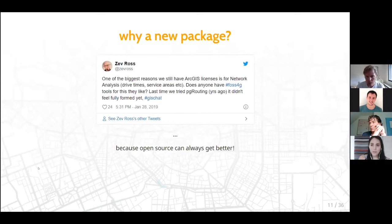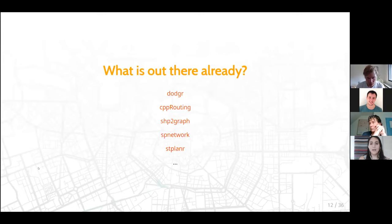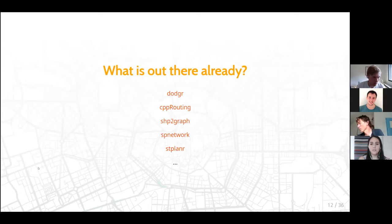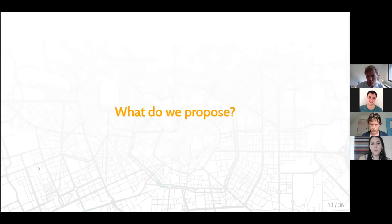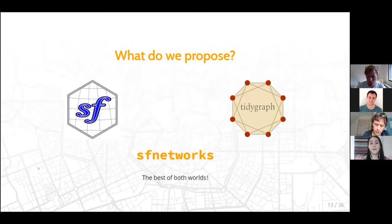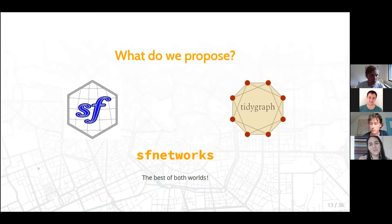There are already several packages that try to address spatial networks in R. We have Dodgr, which we'll talk about more during the hackathon, and stplanr, which Robin will talk about during the applications. But we figured out these packages are a bit more domain-specific, not a basic structure that just binds spatial and networks together. That is exactly what we propose — taking as a base the tidygraph implementation and bridging both worlds with SF networks.